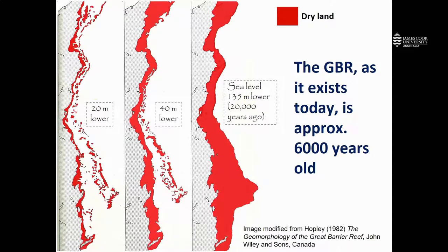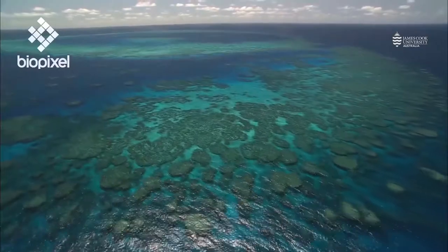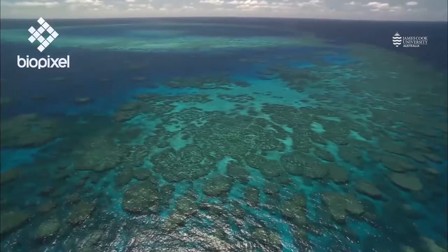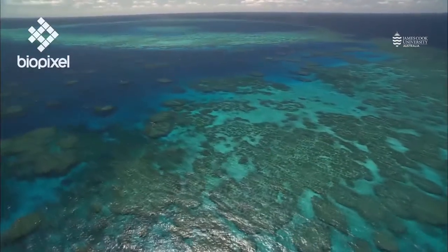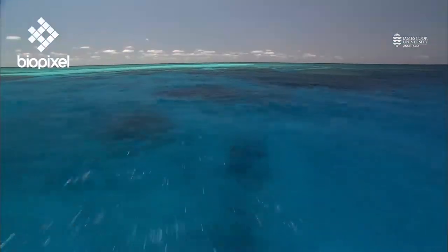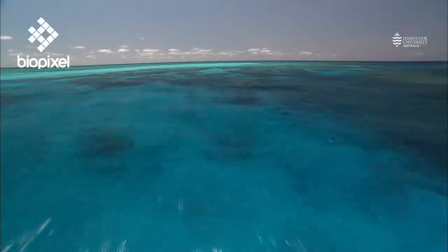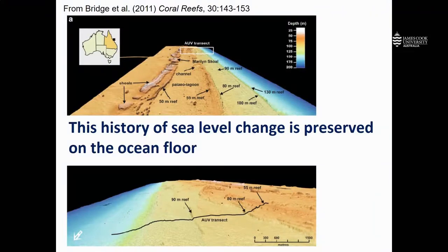So you can see over time, the position of the Great Barrier Reef has changed as the sea levels have moved up and down. And in fact, the Great Barrier Reef as it exists today is approximately 6,000 years old, because that's the period over which sea level has been relatively stable in our recent history. We can actually see these ancient platforms of reef during these periods of different sea level being preserved on the ocean floor.